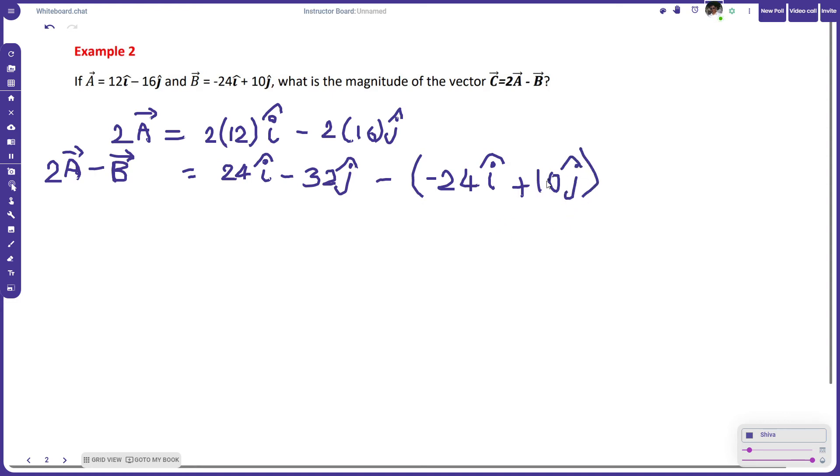So how do we simplify this? We have to add component-wise. Here you see 24 minus negative 24, which is plus 24. So 24 plus 24 equals 48i cap, minus 32 minus 10 which gives us